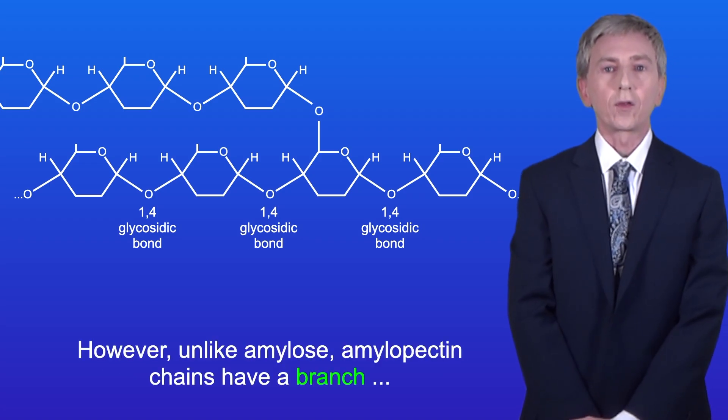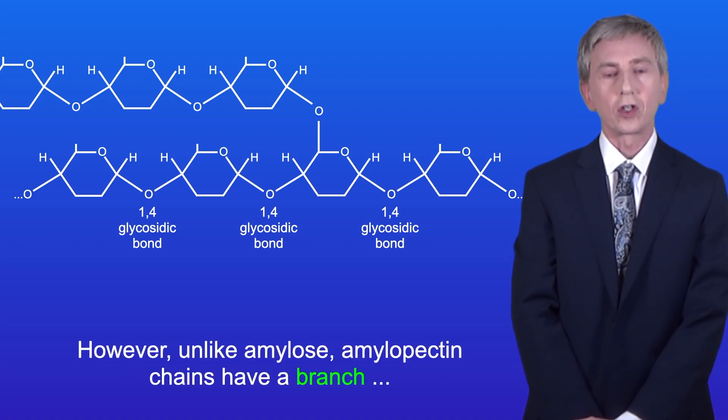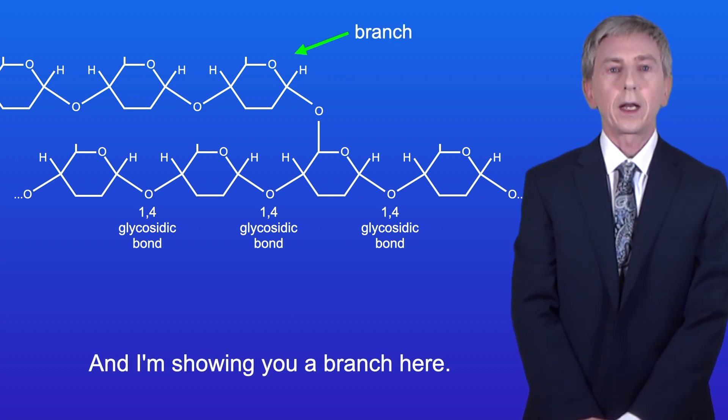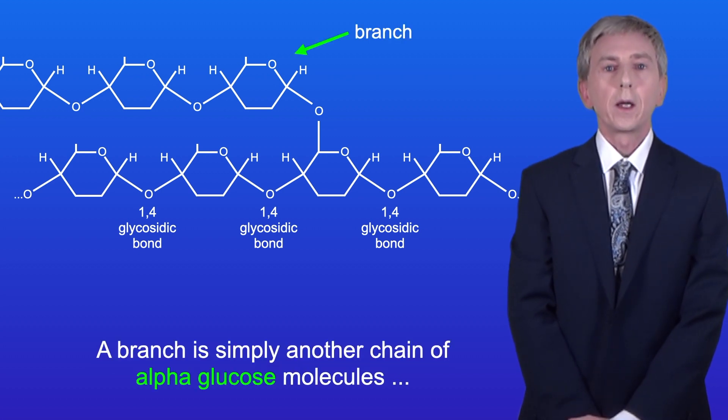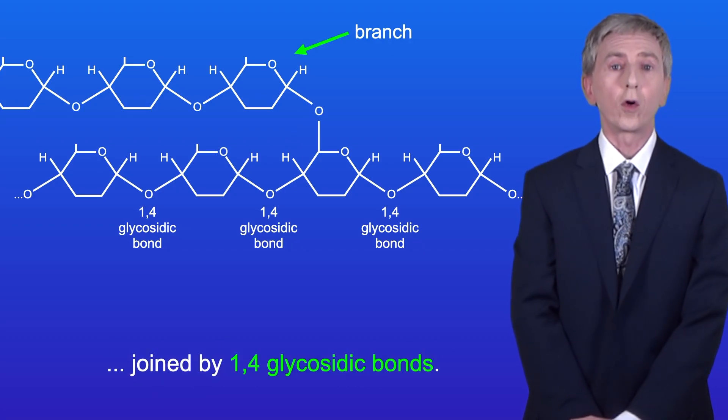However, unlike amylose, amylopectin chains have a branch every 25 to 30 glucose molecules, and I'm showing you a branch here. A branch is simply another chain of alpha glucose molecules joined by 1,4 glycosidic bonds.